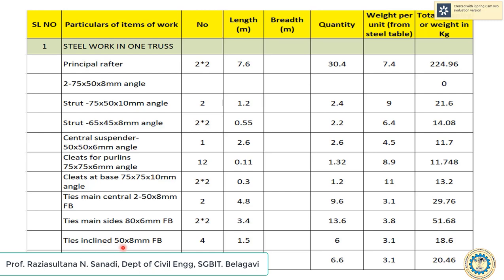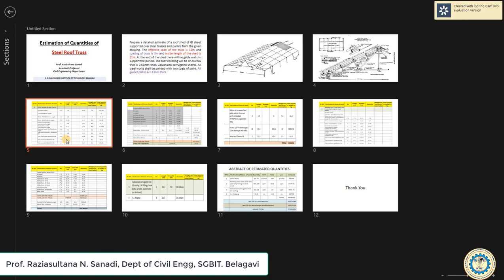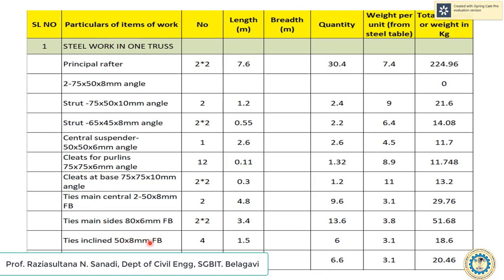Next are ties inclined, 50 x 8 mm. There are 2 inclined ties at each side — tie 1 and tie 2 — giving 4 total at 1.5 meters long. Another inclined tie is 50 x 8 mm, 3.3 meters long, with 1 at each side giving 2 total. Multiplying quantities by weight per unit gives a combined total of 20.46 kg.